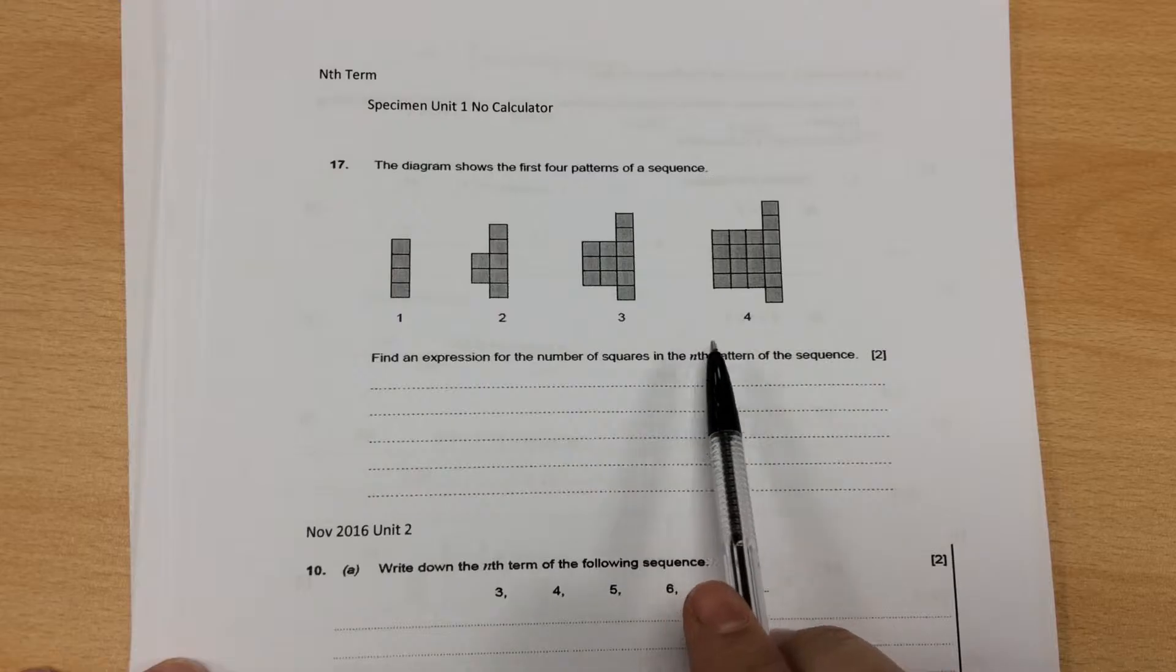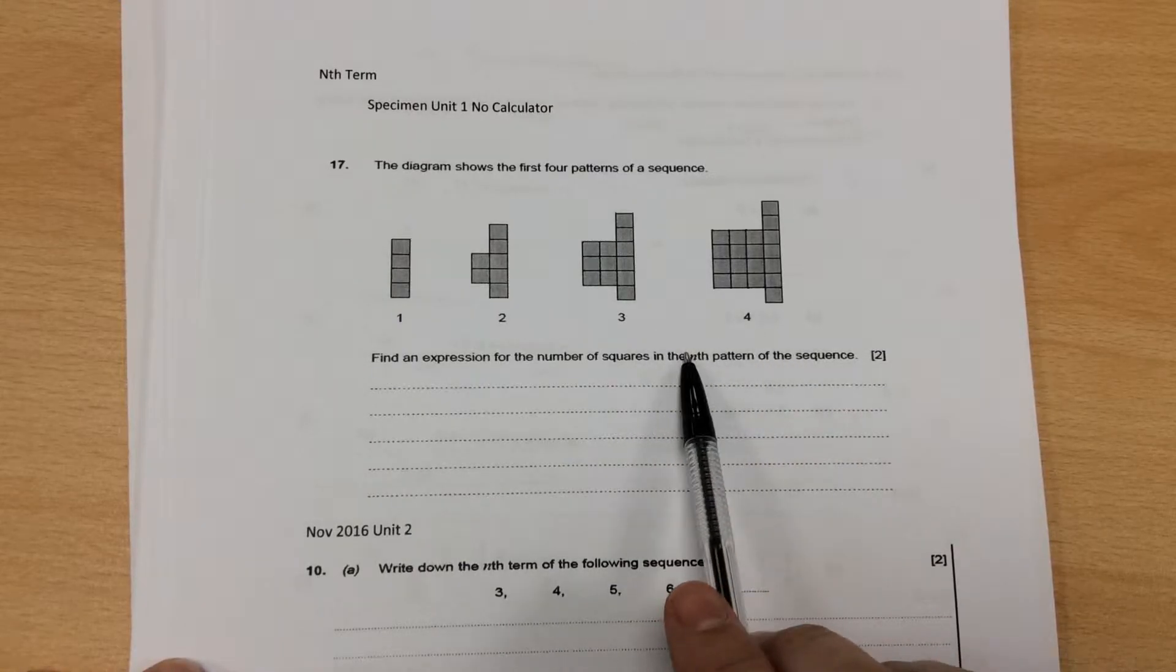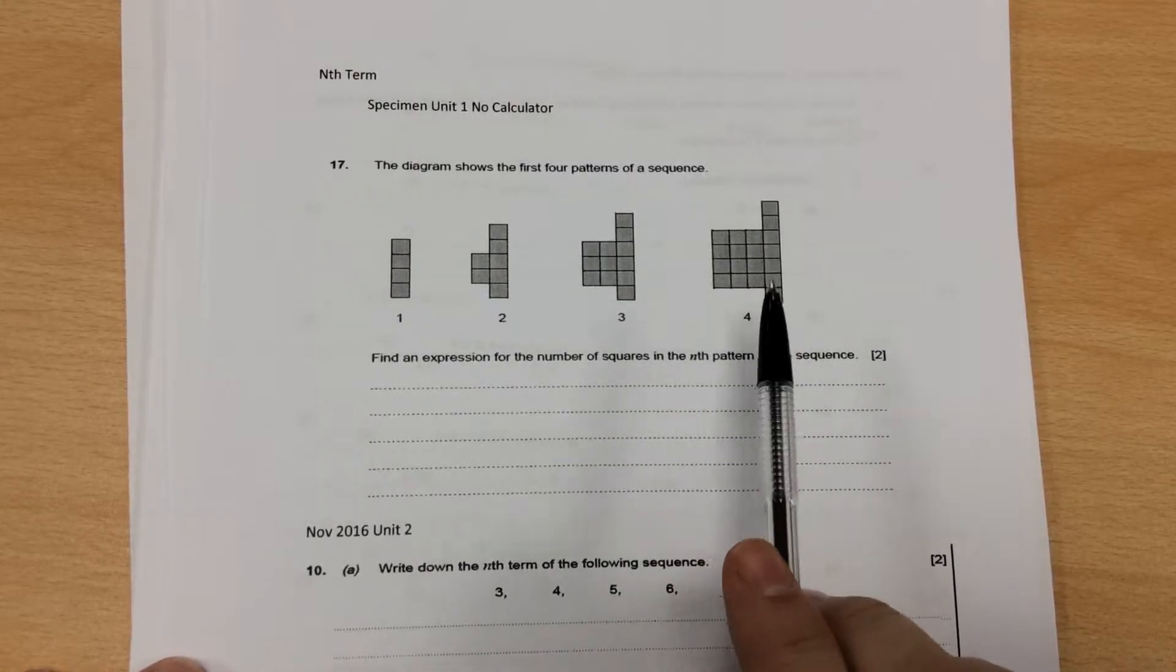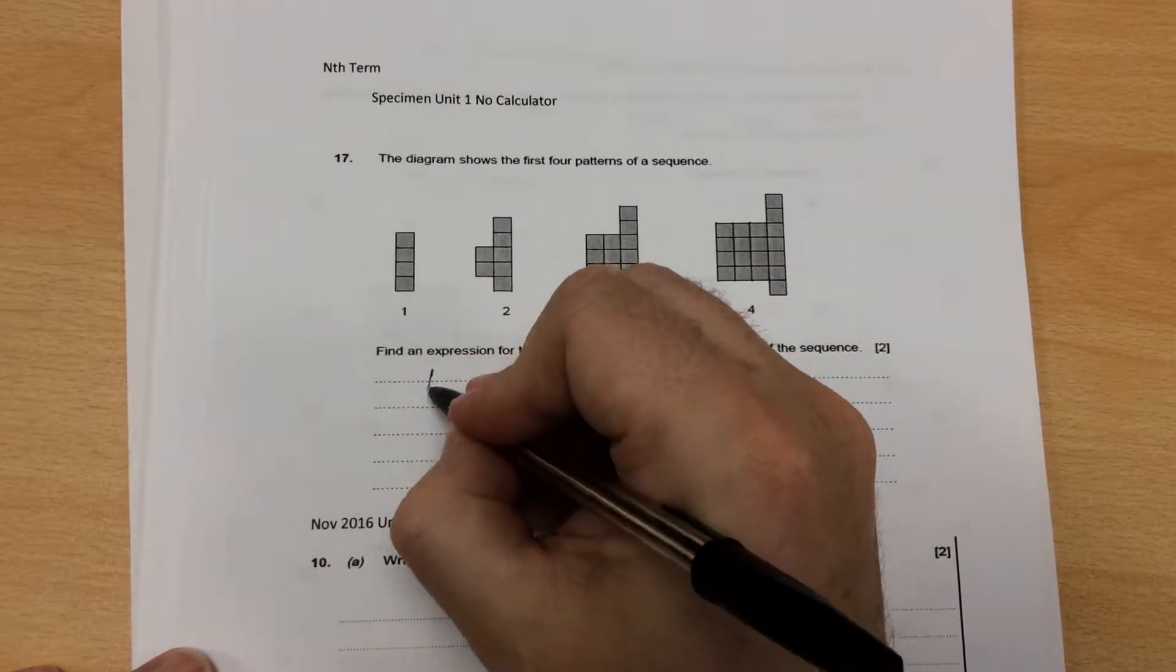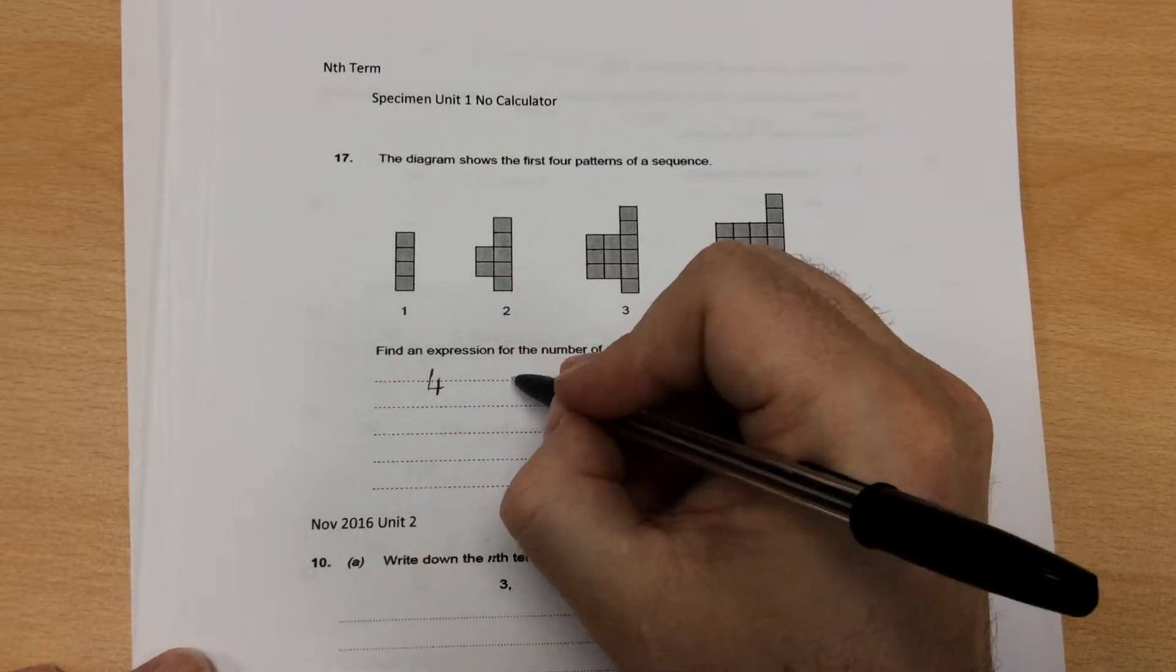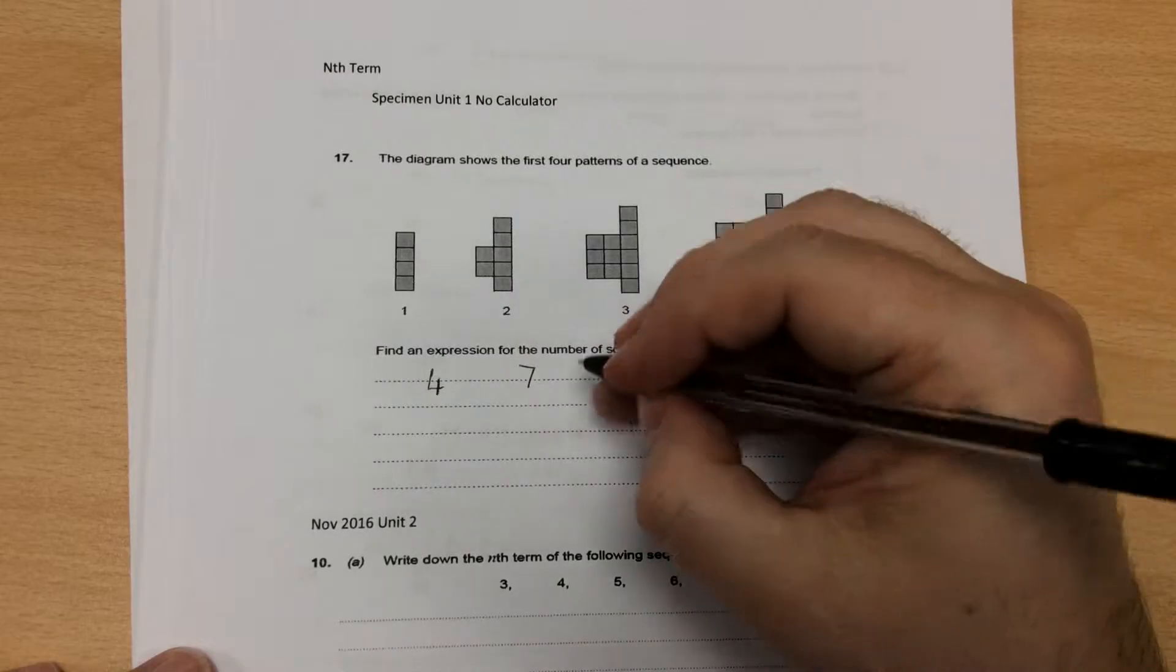The nth term is a general formula that works, and you've got to ask yourself, is it going up by the same amount each time? If I'm starting here, I've got four squares in my first one,